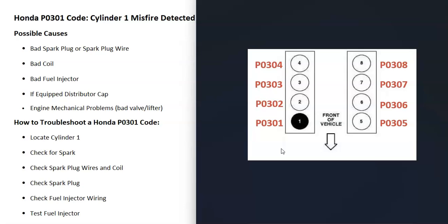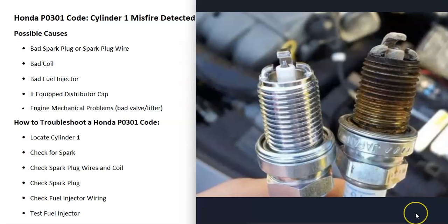If you have multiple P0300 codes, there can be more issues than listed here. For example, if you're getting P0301, P0302, P0303, and P0304, that would point to some other kind of issue like a bad fuel pump or a clogged fuel filter not sending enough gas to the engine. But if you're only getting the P0301, that applies only to the specific number one cylinder — and that's what I'm talking about today.